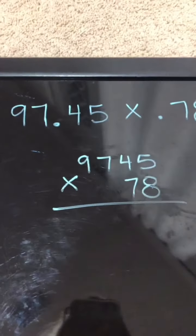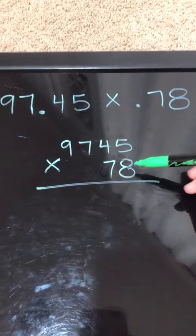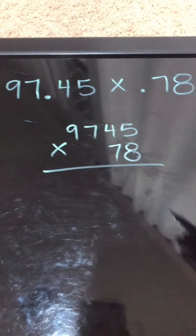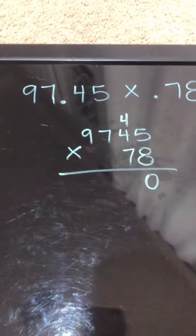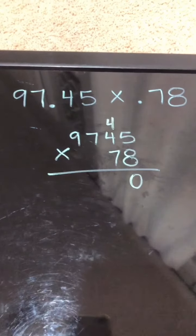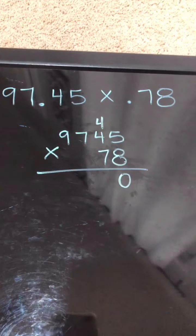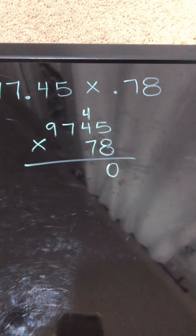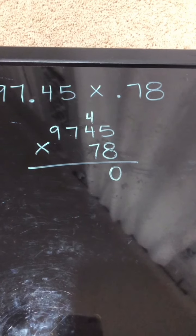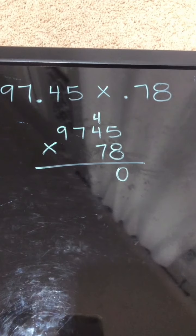Alright, I'm going to go through and multiply. First we're going to have 8 times 5 which gives me 40. So I carry the 4 and drop the zero. 8 times 4 gives me 32. When I take 32 I need to add the 4, the number I carried. So 8 times 4 is 32, 33, 34, 35, 36.